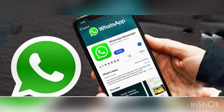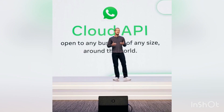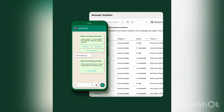Many people are asking what an API is. By definition, an application programming interface is what is called an API. These are basically functions or procedures that allow the creation of an application that in turn accesses the features or data of an operating system, application, or any other services.